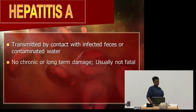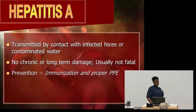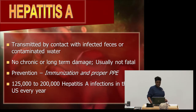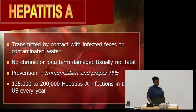Hepatitis A is transmitted by contact with infected feces or contaminated water. There is no chronic or long-term damage, and it's usually not fatal. Prevention includes immunization and proper PPE. There are 125,000 to 200,000 hepatitis A infections in the USA every year.